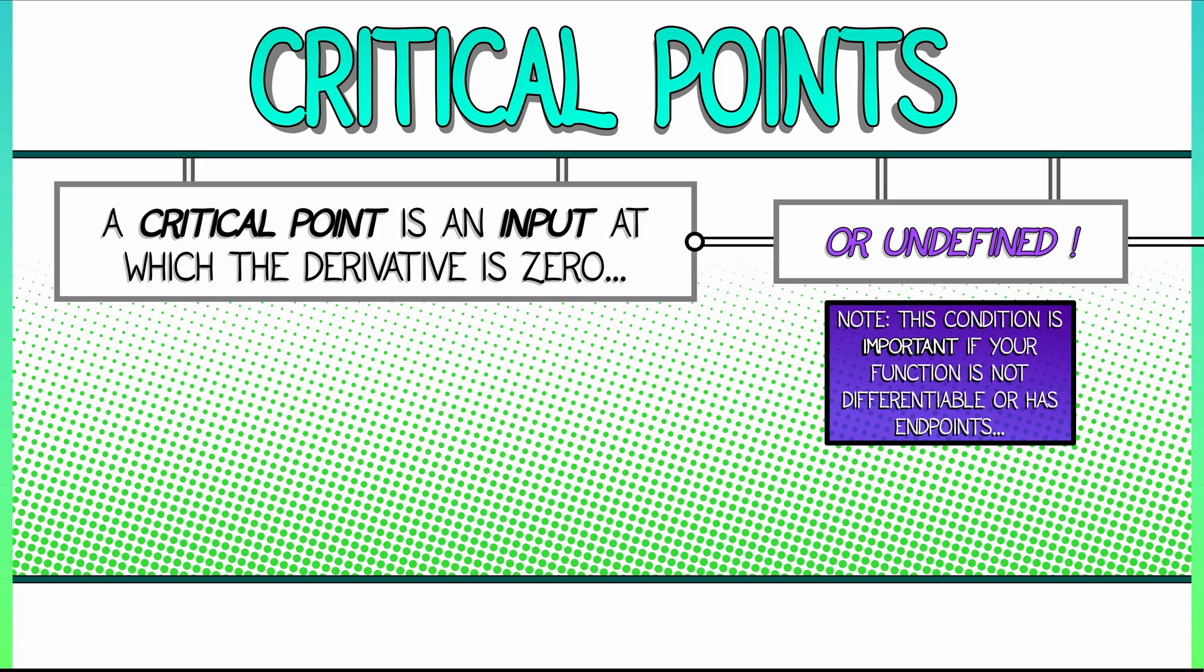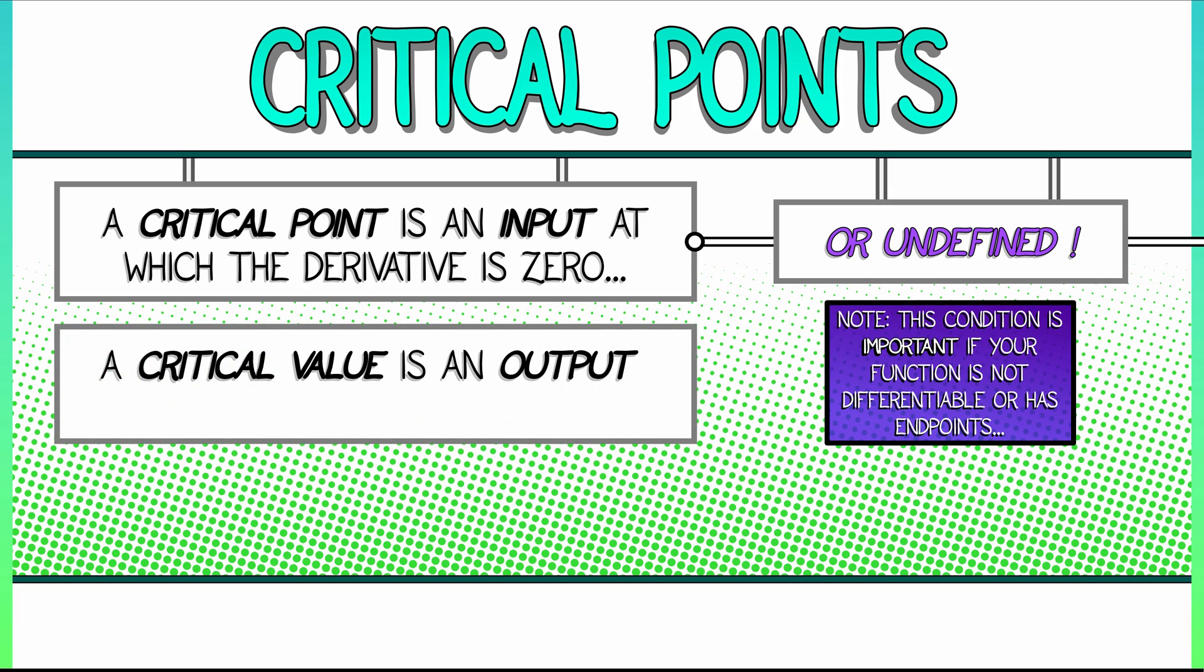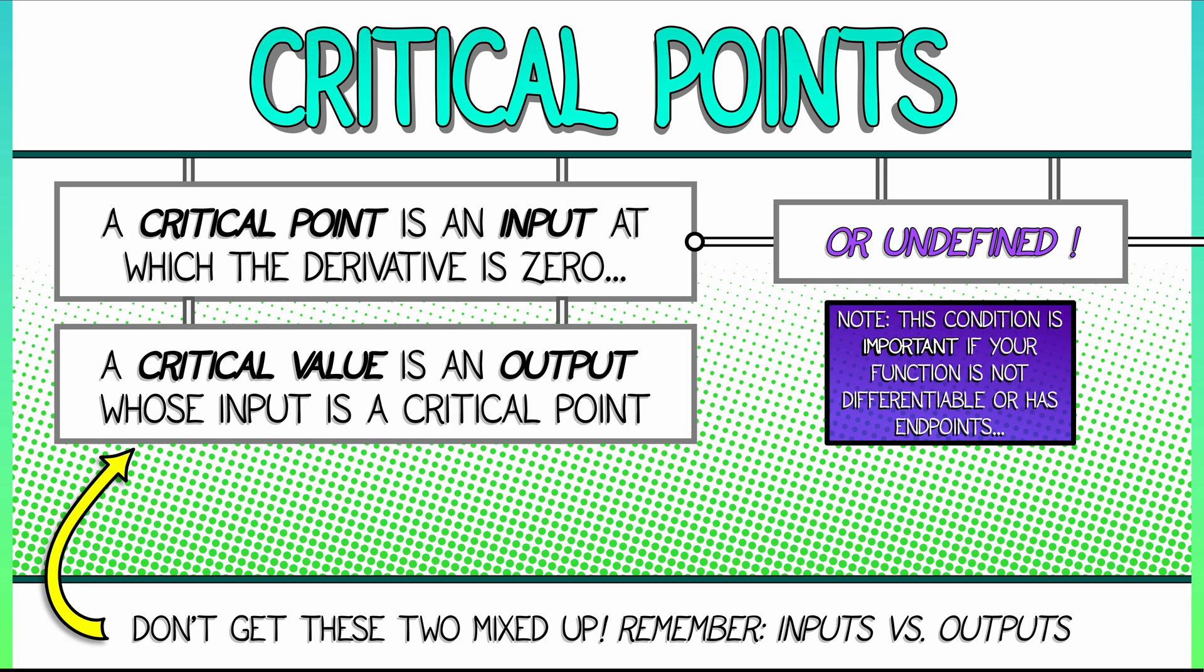Now, there's also the notion of a critical value. That is an output whose input is a critical point. Don't get these two mixed up. The critical point, that's an input. The critical value, that is the output. In a lot of max-min problems, what you're really looking for is a critical value. You're looking for the maximal profit, the minimal cost. But in order to get there, you need to find the corresponding critical point that is itself a max or a min.